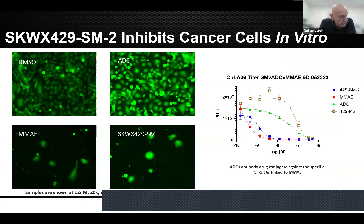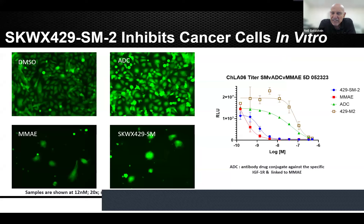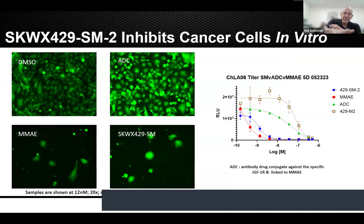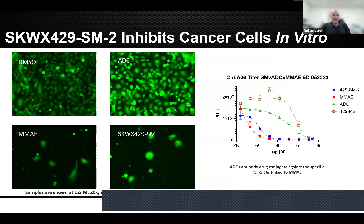I'll show you some in vitro data since we're currently running the animal models for this. The right panel shows a comparison: 429-auristatin is in bronze, the ADC is in green, but 429 with the MYC inhibitor and auristatin is almost as good as auristatin itself. This is also shown in the viability stain panel using calcein. We've improved the conjugate potency many logs just by including that MYC inhibitor. This program is currently in animal models.